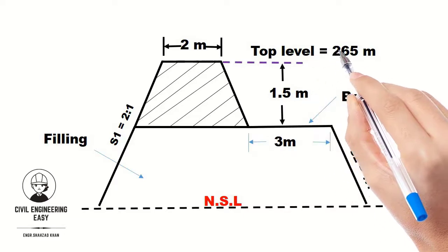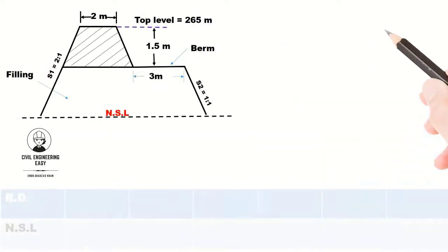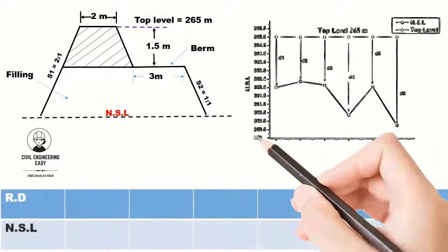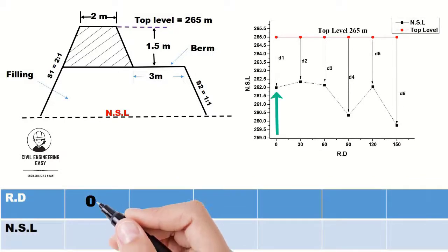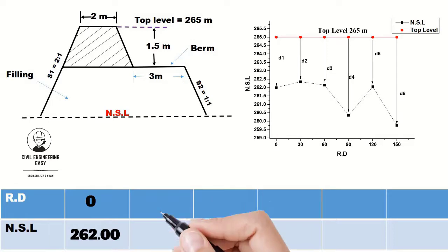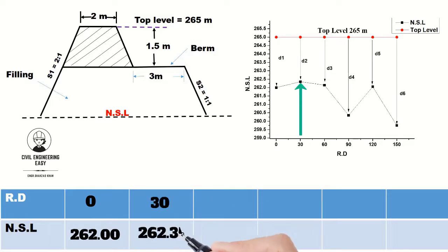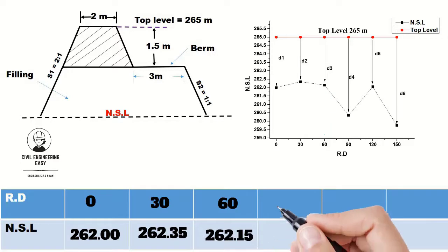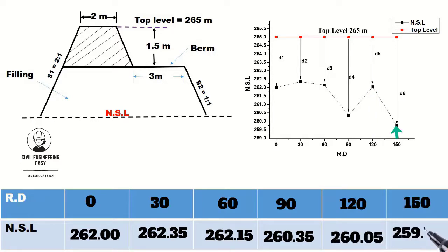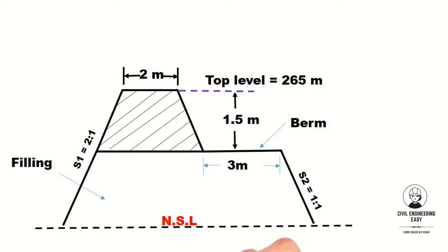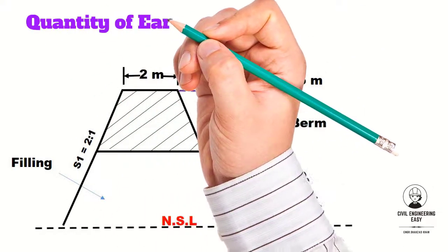The top level of the bank is proposed as 265 meters, and the natural surface levels at 30-meter intervals are given. The natural surface level at chainage 0 is 262, at 30 is 262.35, at 60 is 262.15, at 90 is 260.35, at 120 is 260.05, and at 150 is 259.75.